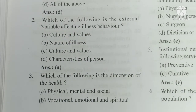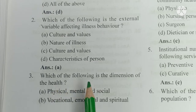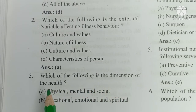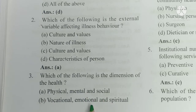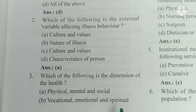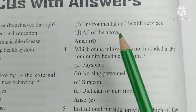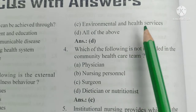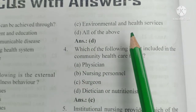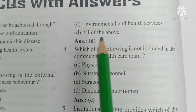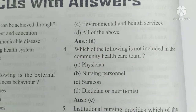Number 3. Which of the following is the dimension of health? A) Physical, mental and social, B) vocational, emotional and spiritual, C) environmental and health services, D) all of the above. The answer is D, all of the above.